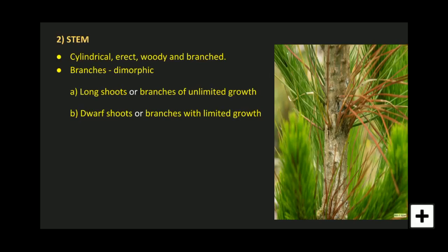The branches are also dimorphic, meaning they are represented in two distinct forms. For example, humans are dimorphic because males are different from females — a single organism representing two distinct forms is called dimorphic. In Pinus, the branches are dimorphic: the first form is the long shoot or branch of unlimited growth, and the second is the dwarf shoot or branch with limited growth.